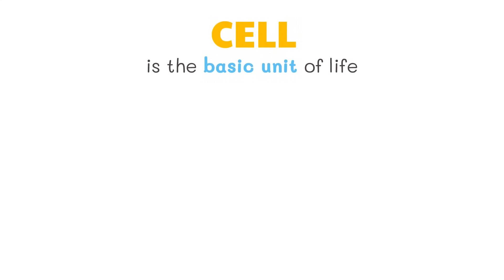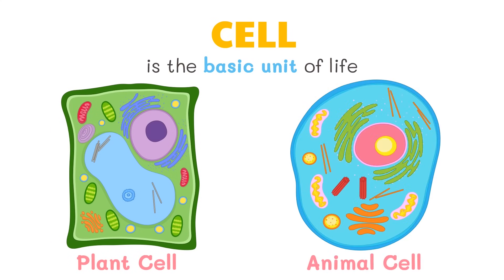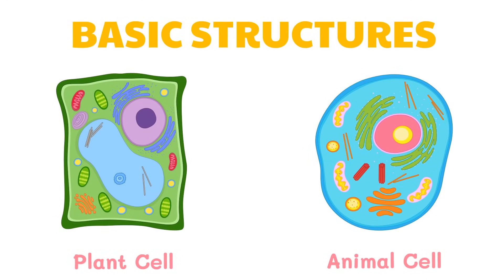The cell is the basic unit of life. There are two kinds of cells: the plant cell and the animal cell. We will be differentiating both types of cells, but for now let's talk about their parts and functions first. While cells differ in size and shape, most of them have common structures. The cells of animals, plants, and related organisms have three basic structures: the cell membrane, nucleus, and cytoplasm.